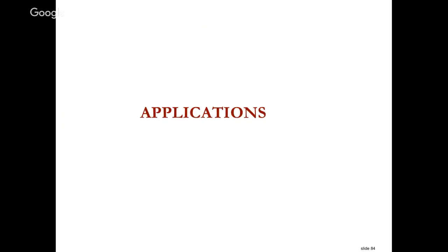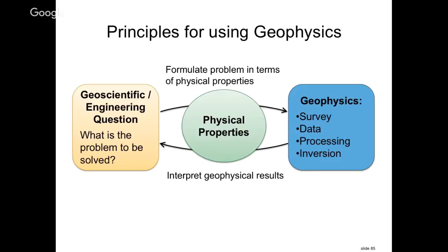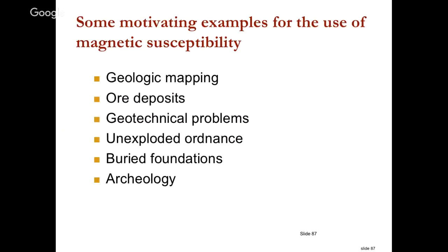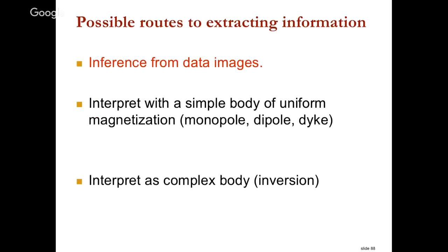Let me quickly go through a couple of applications. The general framework is: start with your geoscientific or engineering problem, figure out what your physical property is, design your survey, collect data, process, invert, get a physical property distribution, then figure out how that addresses your problem. That's always the sequence, and we have a whole bunch of examples it can be applied to.